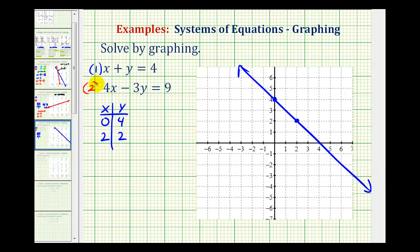For the second line, we have 4x minus 3y equals 9. For this line, let's put it in the slope-intercept form, or the form y equals mx plus b.